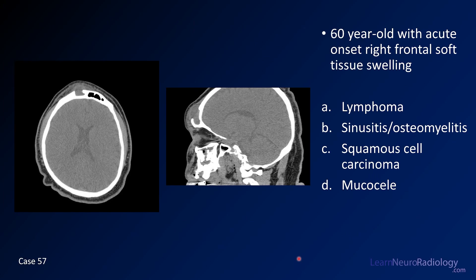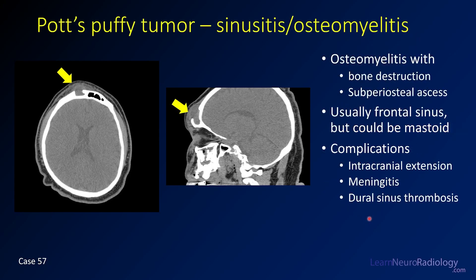Case number 57 is a 60-year-old with acute onset right frontal soft tissue swelling, with CT images. Choices are lymphoma, sinusitis and osteomyelitis, squamous cell carcinoma, or mucocele. This is sinusitis with osteomyelitis — sometimes called a Pott's puffy tumor. There is infection of the frontal sinus with breakthrough destruction of the anterior bony margin extending into the frontal soft tissues. Mucoceles usually cause smoother bone remodeling, not this type of destruction.